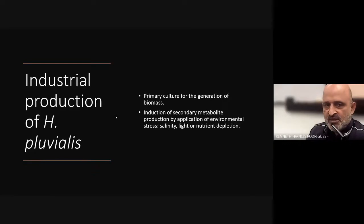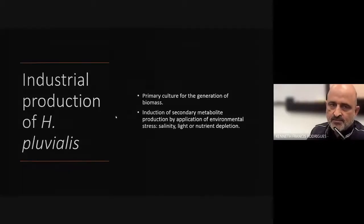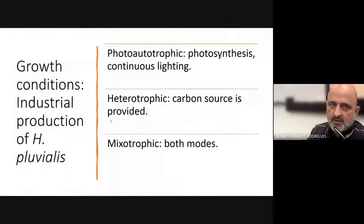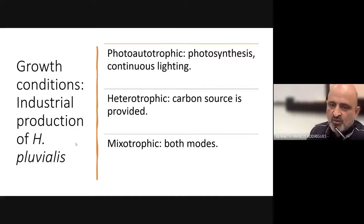Coming to the industrial production of Haematococcus, there are two phases. We have the primary culture for the generation of biomass, and then the secondary metabolites are induced by the application of certain environmental stressors such as salinity, light, or nutrient depletion. In terms of culture modes, we have the photo-autotrophic mode using photosynthesis with continuous lighting, the heterotrophic mode in which a carbon source is provided, and the mixotrophic mode which utilizes both modes for the industrial production of Haematococcus.